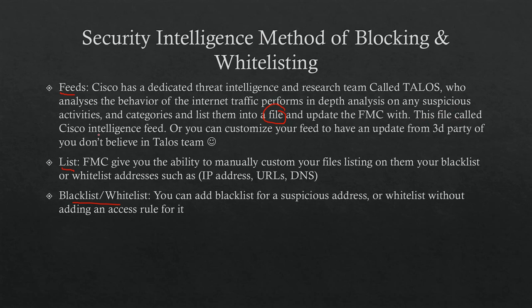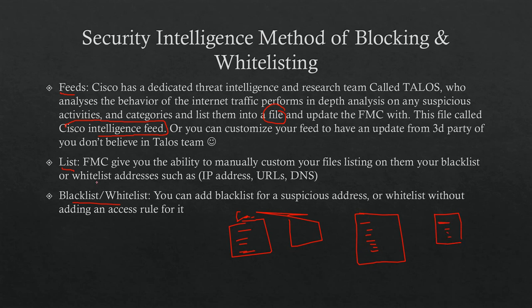The Cisco Intelligence Feed file contains bad/blocked IP addresses, URLs, and domain names. For lists, FMC gives you the option to upload your own custom list: you create a text file listing IP addresses one after another, upload it, and depending on whether you place it in the blacklist or whitelist, it will blacklist or whitelist those IP addresses accordingly.